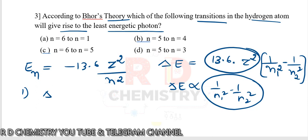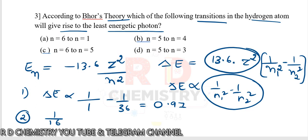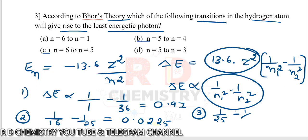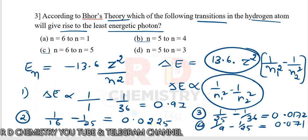For option 1 (N=1 to N=6): 1/1² − 1/6² ≈ 0.97. For option 2 (N=4 to N=5): 1/16 − 1/25 ≈ 0.025. For option 3 (N=5 to N=6): 1/25 − 1/36 ≈ 0.0172. For option 4 (N=3 to N=5): 1/9 − 1/25 ≈ 0.071. The least value is for the third option, N=6 to N=5. So the answer is option 3.